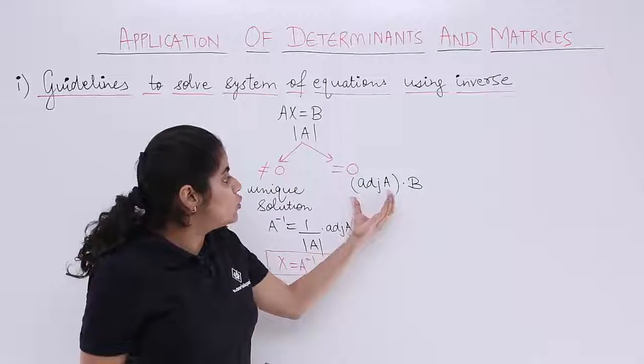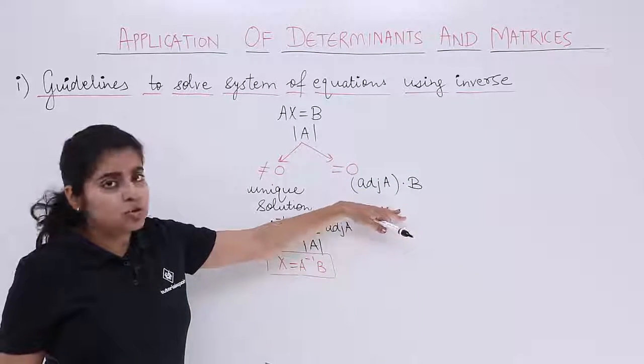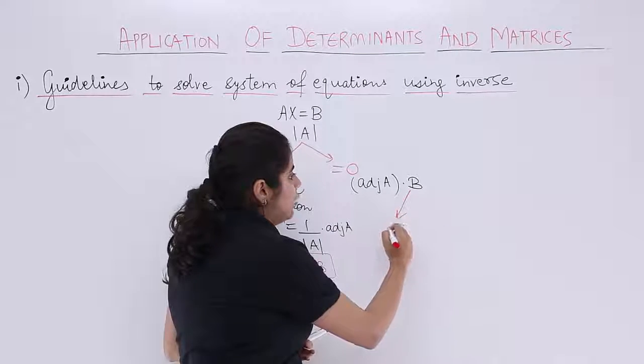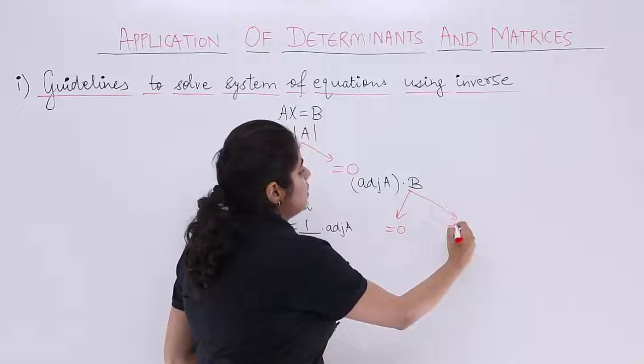What you need to find? Adjoint A into B. Now again, this adjoint A into B will have some value. Maybe this value comes out to be 0, and maybe this value is not 0.